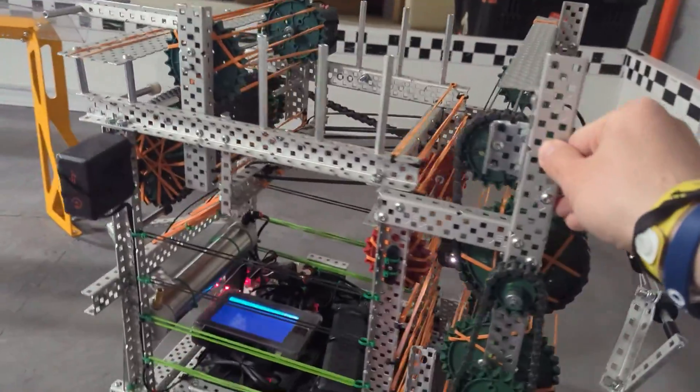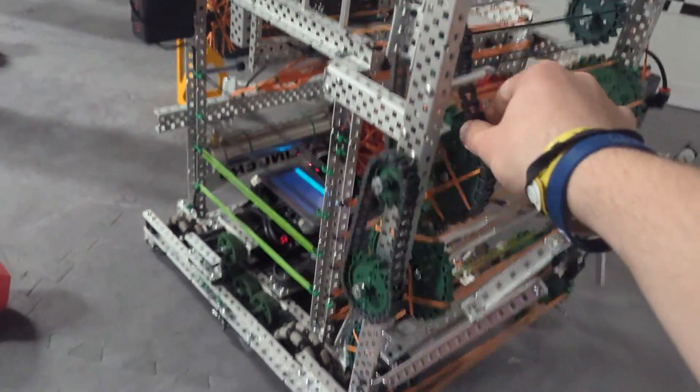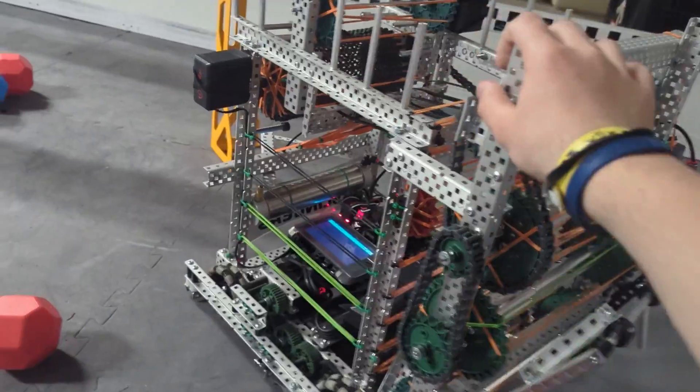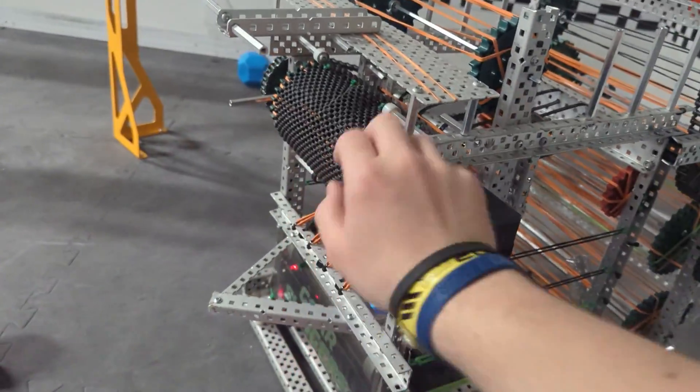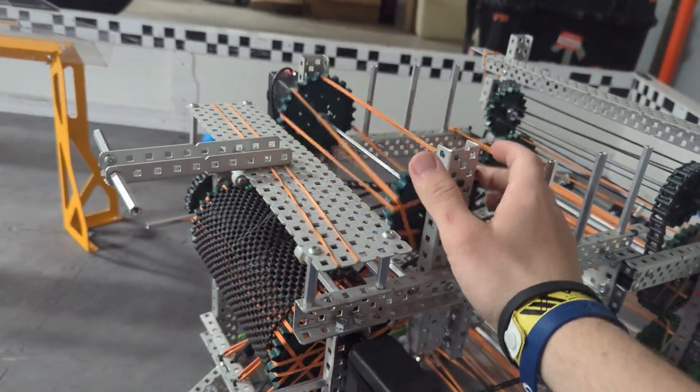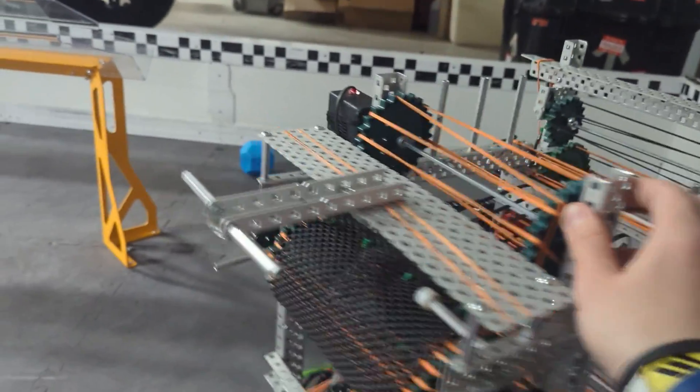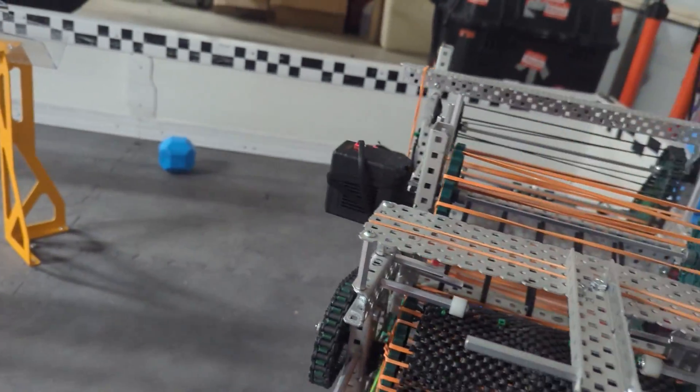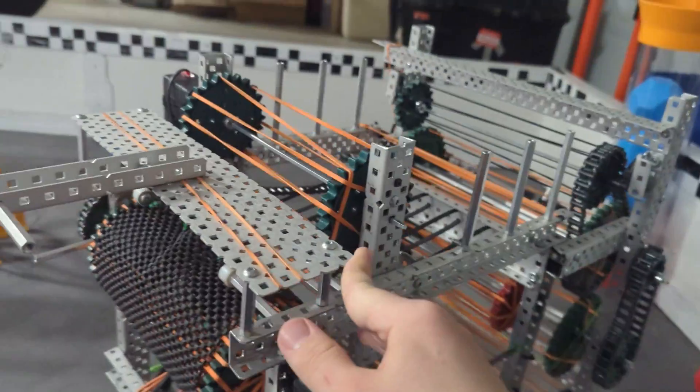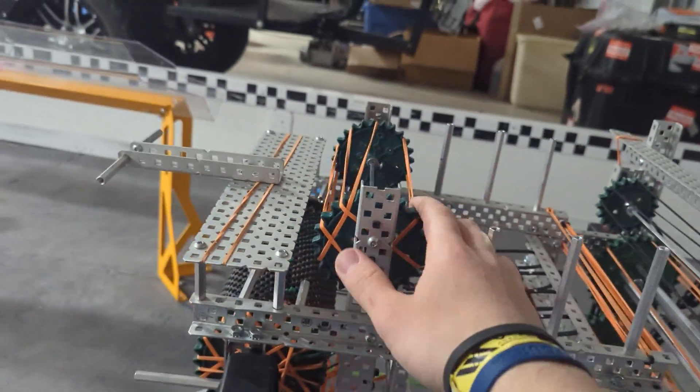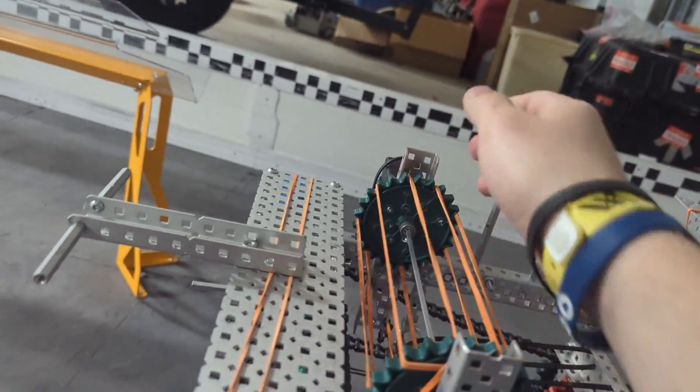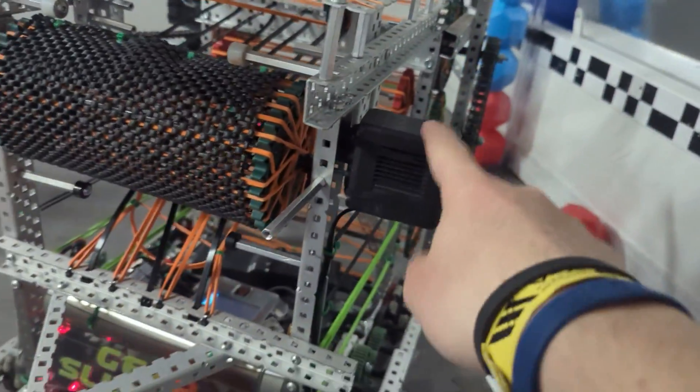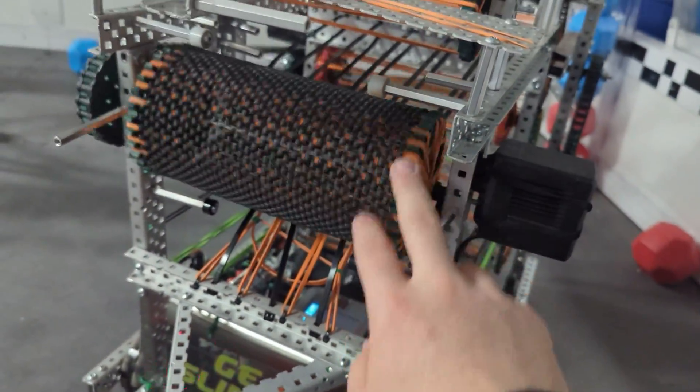This robot has a couple parts to it. We have our intake right here. It all spins together like this. Then we've got our top roller up here, and this one just spins all by itself on its own motor. This can very easily be a 5.5 watt motor. I'm in VexU, so I can use as many motors as I want, but for high school, you could totally just use a half motor right there, and same goes for this roller right here.